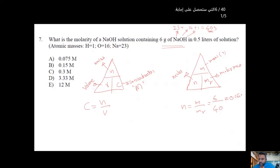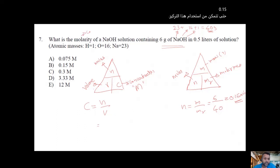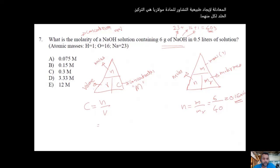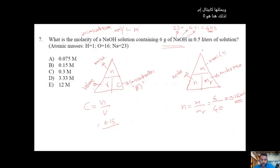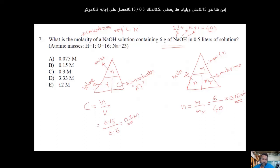Now using the concentration equation: molarity equals moles over volume. That is 0.15 divided by 0.5, giving an answer of 0.3 molar. Molarity is expressed in mol per liter and represented by capital M. So the answer is 0.3 M.